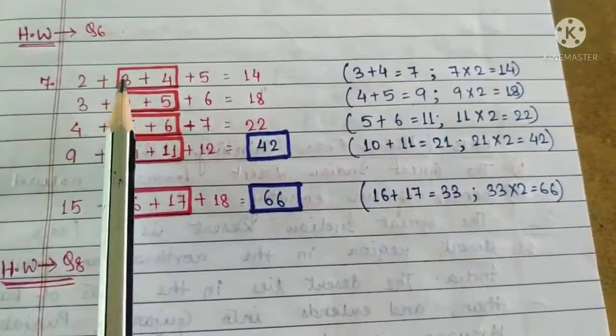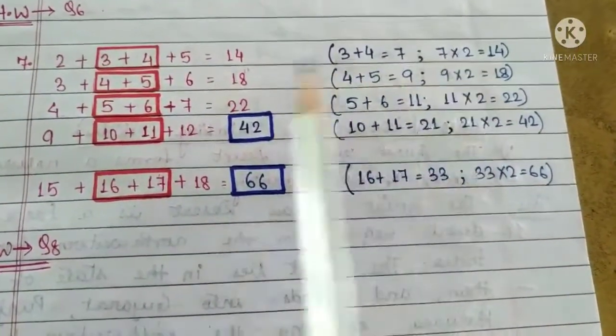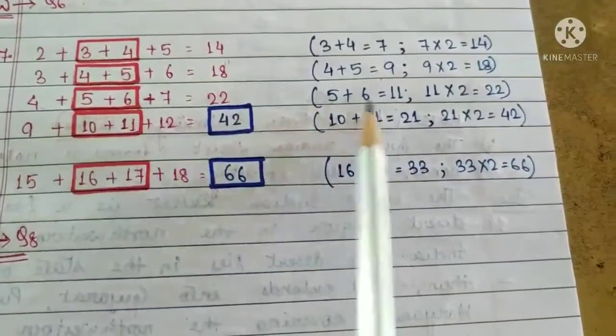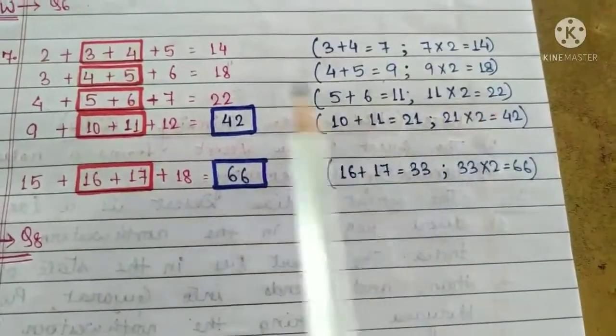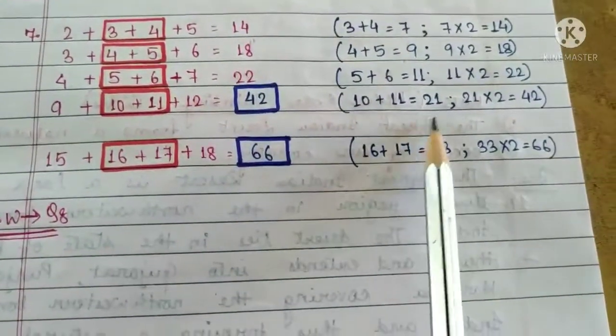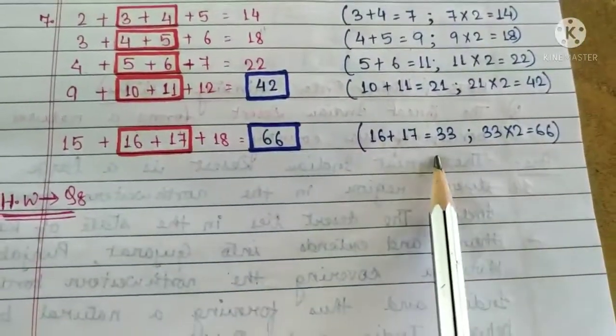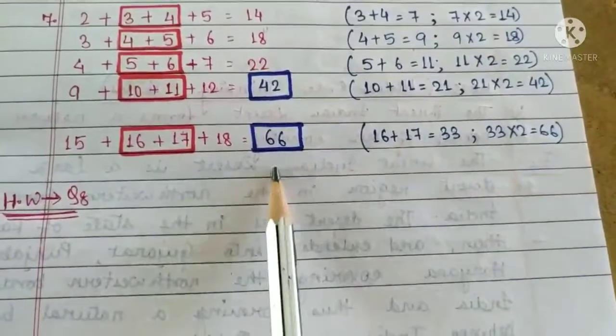So here you have to take out the sum of the second and the third number and then multiply it with 2. So similarly, 5 plus 6 is 11. 11 into 2 is 22. Here we have 10 plus 11 is 21. 21 into 2 is 42. Again, 16 plus 17 is 33. 33 into 2 is 66.